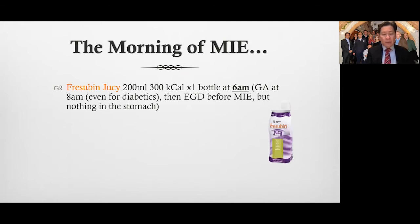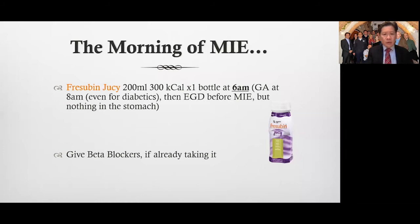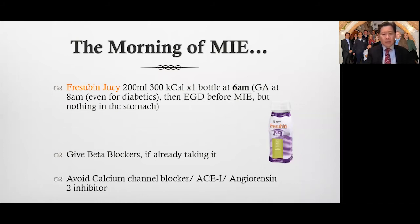A common worry is the possibility of aspiration, but at the time of general anesthetic — roughly around 8 o'clock — we perform an endoscopy first, and we have shown time and time again there is nothing left in the stomach. For those taking beta blockers, we continue them, but for those on calcium channel blockers or ACE inhibitors, we stop them just to reduce post-op hypotension.